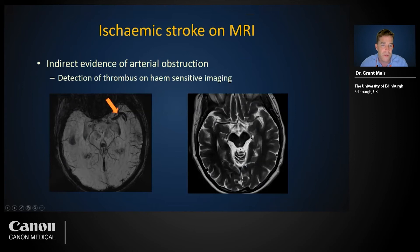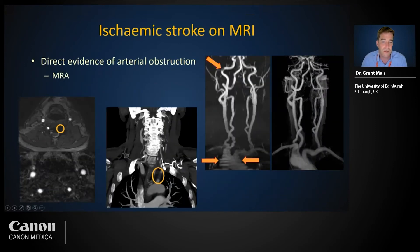Heme-sensitive MRI sequences such as SWI may clearly highlight arterial blood clots. MR angiography (MRA) can be used like CTA to provide direct evidence of arterial obstruction, but is more sensitive to imaging artifacts such as apparent occlusion if flow is reversed — as in subclavian steal — and movement artifacts. The subclavian steal case illustrates the difference between angiography without and with contrast.